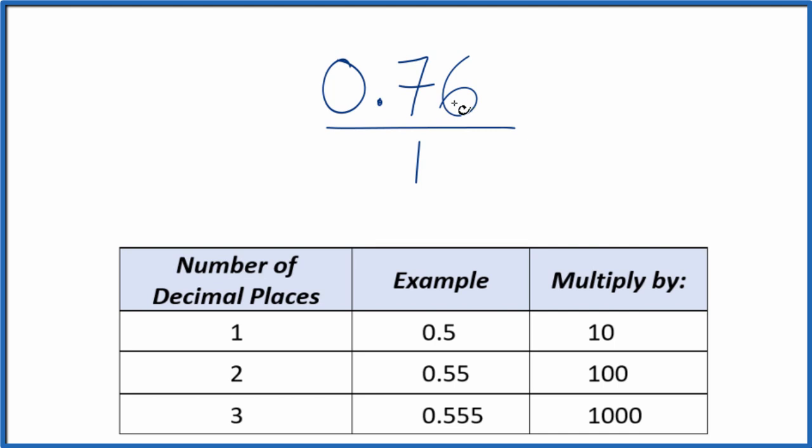We need to get the 0.76 to be a whole number, and I can see we have two decimal places. Two decimal places, if we multiply it by 100, that'll give us a whole number. So 100 times 0.76, that equals 76. So we have our whole number.